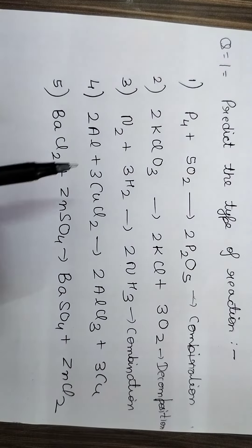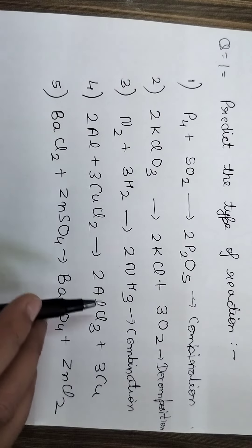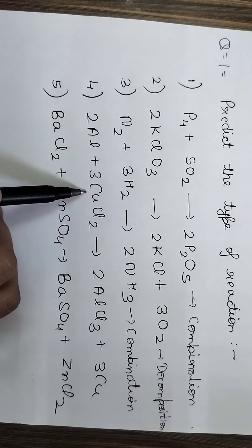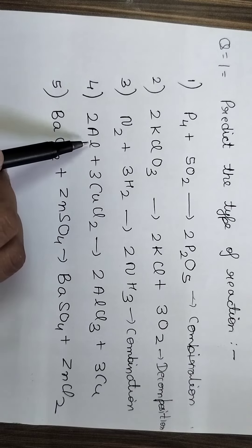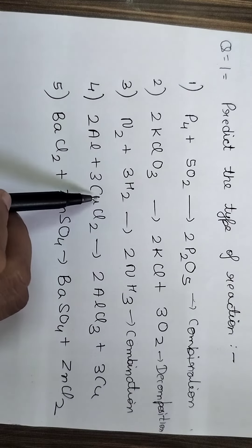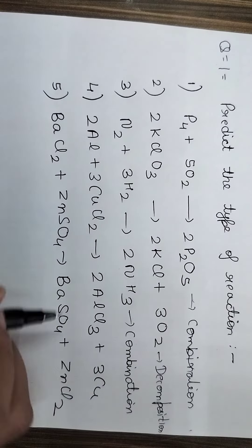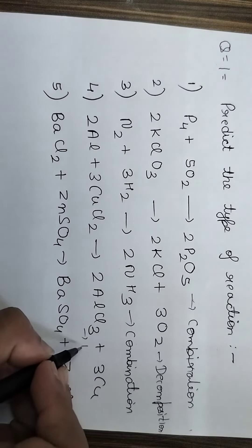If we can see the fourth one, there are two reactants and two products, out of which one is a single species, one is a salt. The single species is replacing this metal ion from this CuCl2. So this will be a displacement reaction.